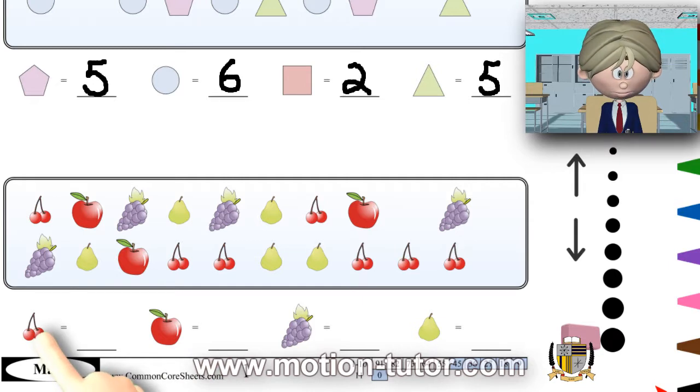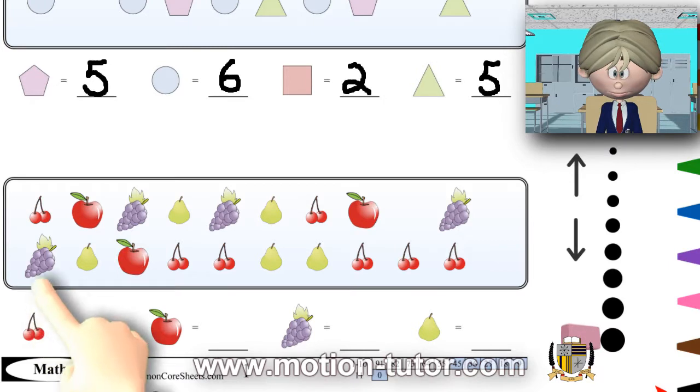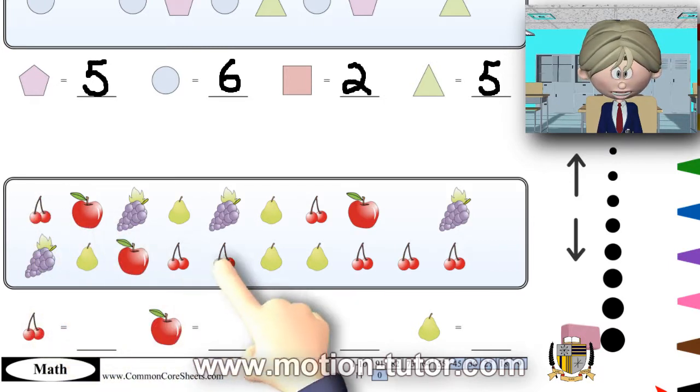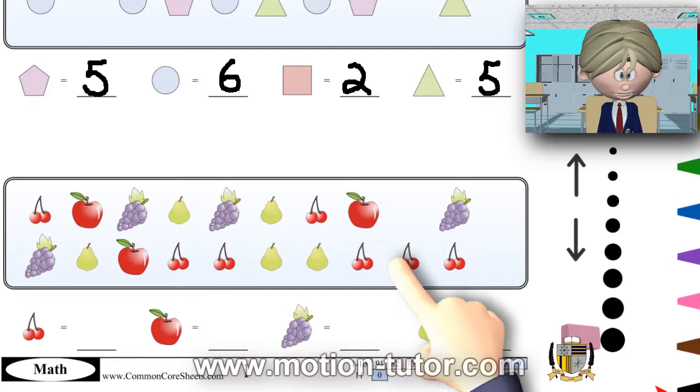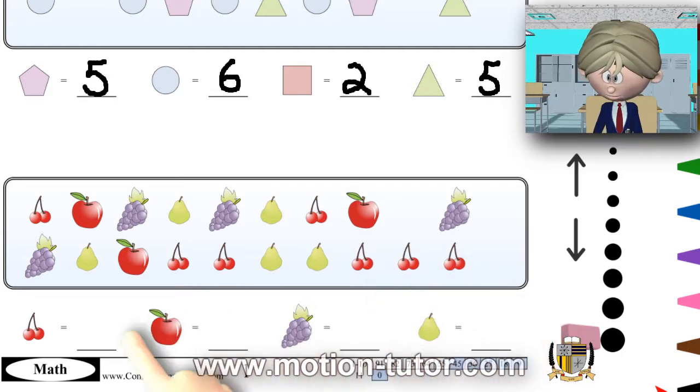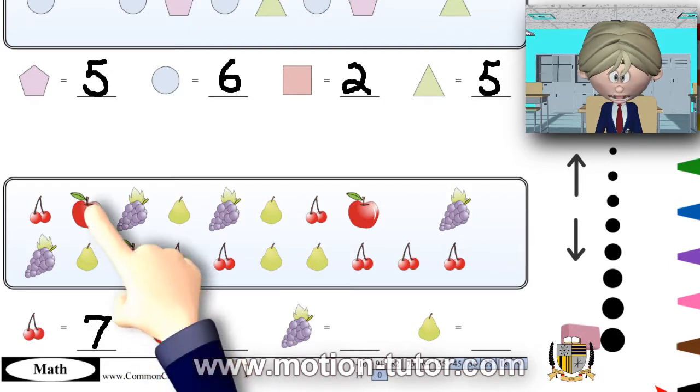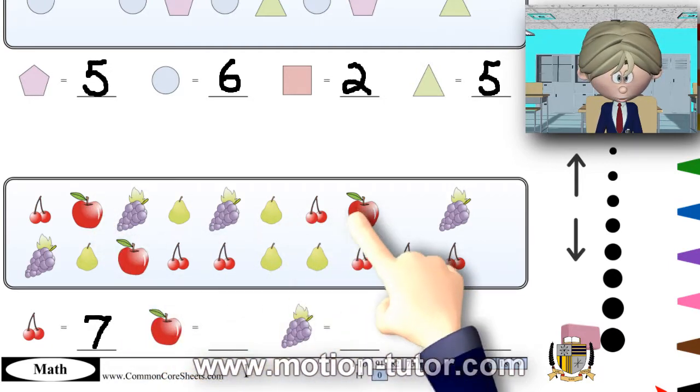Okay, how many cherries? One, two, three, four, five, six, seven cherries. How many apples? One, two, three apples.